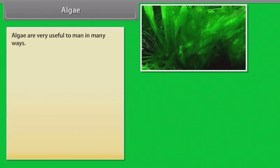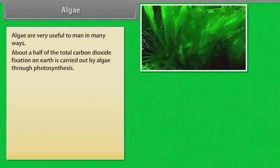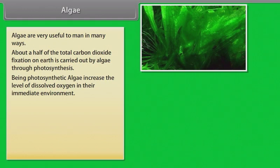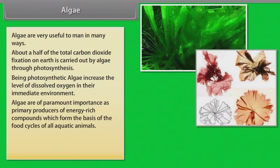Algae are very useful to man in many ways. About a half of the total carbon dioxide fixation on earth is carried out by algae through photosynthesis. Being photosynthetic, algae increase the level of dissolved oxygen in their immediate environment.